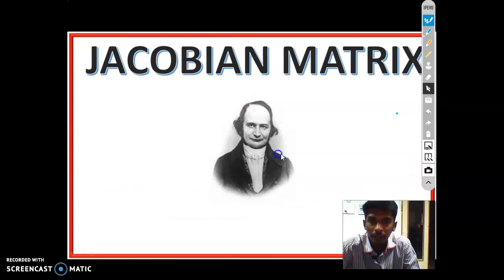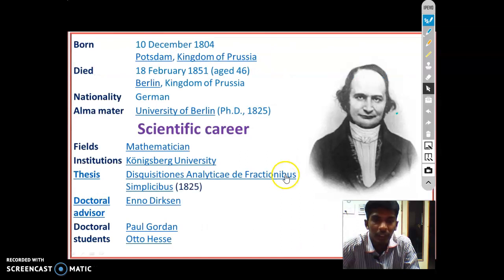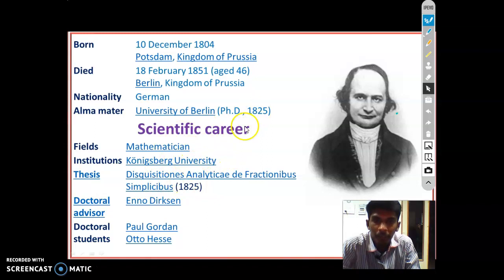Today's topic is the Jacobian Matrix. This Jacobian Matrix subject question was asked in the Anna University examination during December 2017 and May 2018. Here is a brief biography of Jacobian: he was born 10th December 1804 in Potsdam, Kingdom of Prussia. He died 18th February 1851 at the age of 46, in Berlin, Kingdom of Prussia. Nationality: German. His field of work was Mathematics.